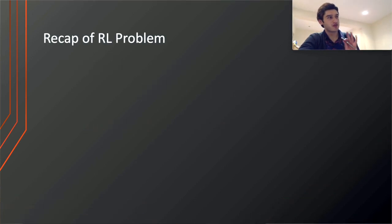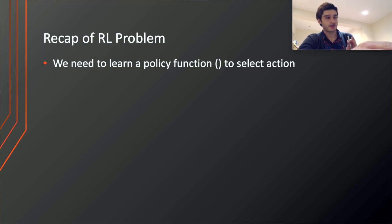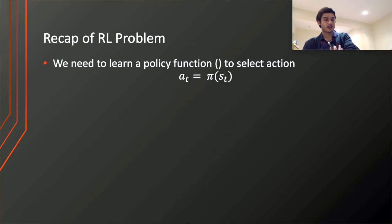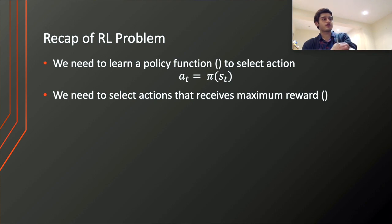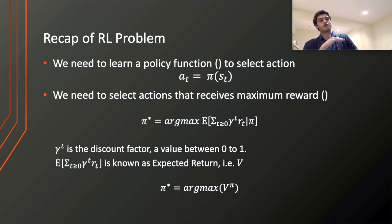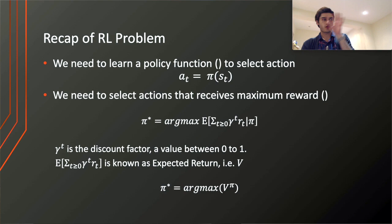First of all, I wanted to recap the reinforcement learning problem. This slide is showing nothing you've not seen before — it was covered in the previous video, so don't be afraid. Like we said previously, we want our agent to learn a policy such that it can select actions with the highest reward. There are two ways we can learn this policy function: one is to directly infer the policy, or we can indirectly infer it. The method of directly inferring policy is a lot more difficult, as opposed to the indirect method, where we simply take the maximum of the expected return for a given policy for a particular state, giving us our optimal policy.